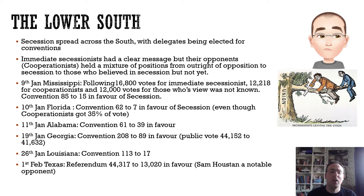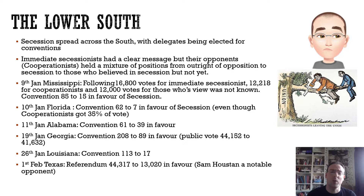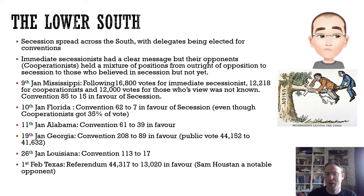A series of conventions were called, most following a similar story. There was also a third group, visible in Mississippi, where some candidates stood without clearly stating their position — running on reputation and trusting voters to decide. In the Mississippi delegate vote, there were almost 17,000 votes for immediate secessionists, just over 12,000 for cooperationists, and another 12,000 for undeclared candidates. The convention came out 85 to 15 — a lopsided balance.